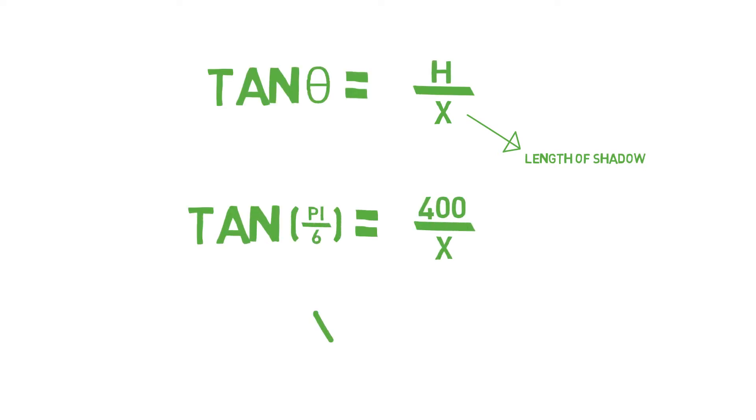Now from the diagram, x equals the length of the shadow which can be solved by dividing 400 by tan pi over 6, which solves for x equals 692.82 meters.